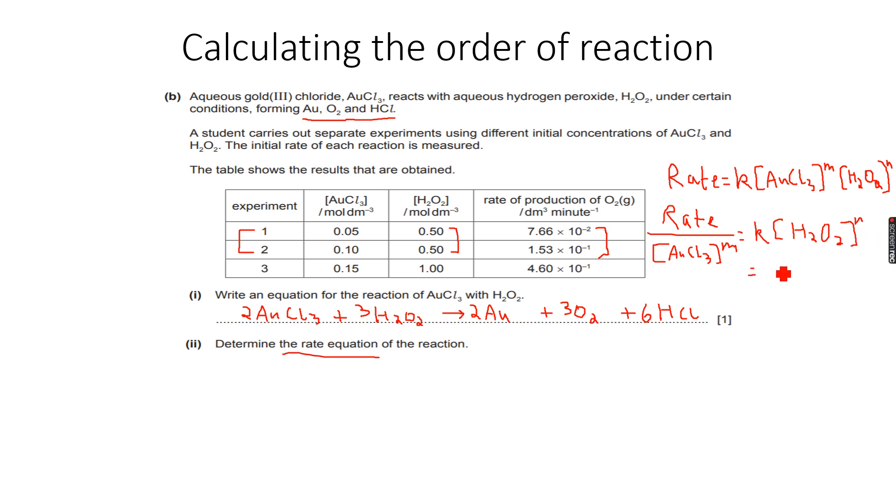Let's say this equals a constant C. Why is this equal to constant C? Because if you look at experiments one and two, the concentration of AuCl3 is doubling, it is changing, but the concentration of H2O2 is the same, it's constant. K is a constant, the concentration of H2O2 is constant, so this entire term is constant for experiments one and two. This means that for experiments one and two, rate over AuCl3 to the power of M equals a constant C.